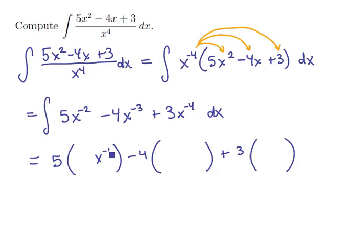The antiderivative of x to the minus 2, up the power by 1, divide by the new. The antiderivative here, up the power by 1, negative 2, divide by negative 2. And for x to the minus 4, up the power by 1 to a minus 3 and divide by a minus 3.